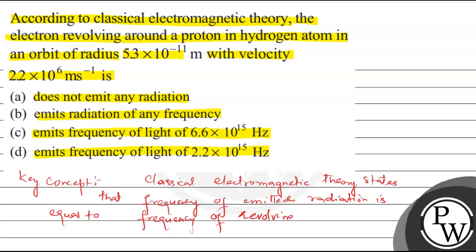So, the frequency of emitted radiation νE is equal to the frequency of the revolving electron, which is velocity divided by the circumference of the circular orbit.